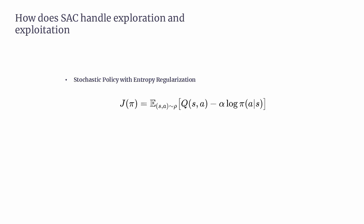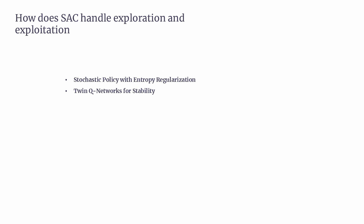The objective function includes Q(S,A), which evaluates how good it is to take action A in state S, and alpha, which controls the balance between maximizing rewards and maintaining exploration. Increasing alpha emphasizes exploration, while decreasing it focuses more on exploitation. SAC also employs twin Q-networks to estimate the value of state-action pairs, reducing overestimation bias — a common issue where agents might incorrectly believe certain actions are better than they are. These twin Q-networks provide a conservative estimate of action values, ensuring the policy doesn't prematurely focus on exploiting suboptimal actions, making learning more stable.